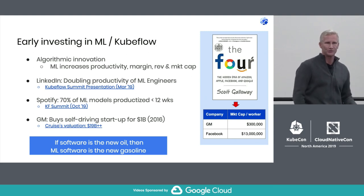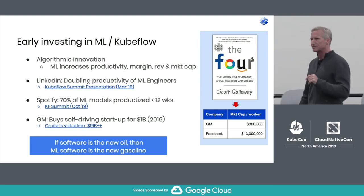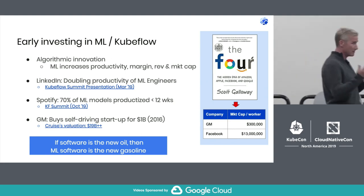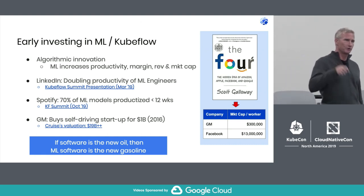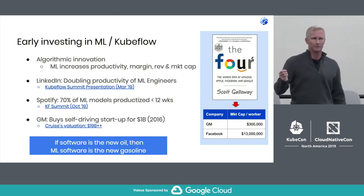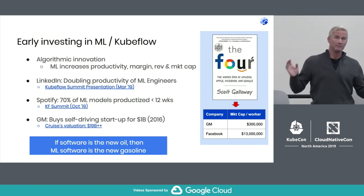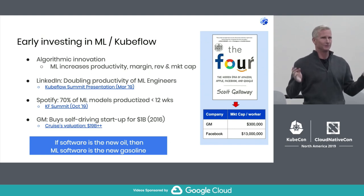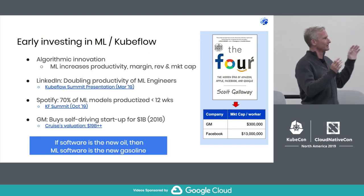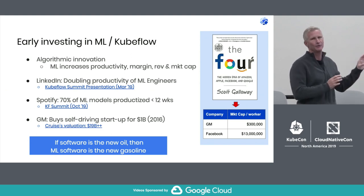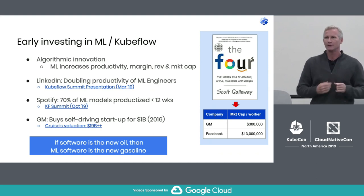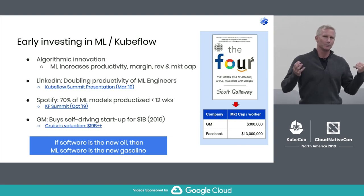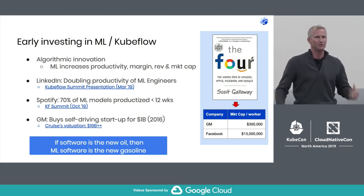Just to circle back to General Motors: in 2016, GM bought a self-driving startup called Cruise Automation for a billion dollars. This year, Cruise Automation was valued at $19 billion. I haven't met an engineer yet that doesn't want to be part of a unicorn. This type of value increase is just remarkable. I read on Motley Fool that Cruise Automation might be worth $40 billion — incredible because GM's total valuation is only $52 billion.